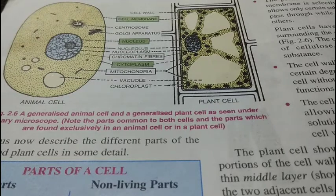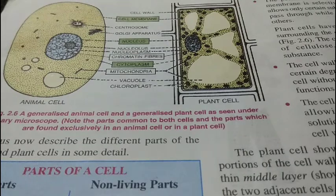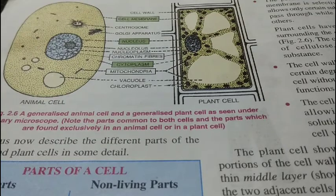The lysosomes are the intracellular digestive centers of the cell. They sometimes destroy the cell through the enzymes they secrete, and in this way they are called the suicide bag of the cell. They ultimately destroy and digest foreign substances, but sometimes their own secretion leads to the death of the cell.